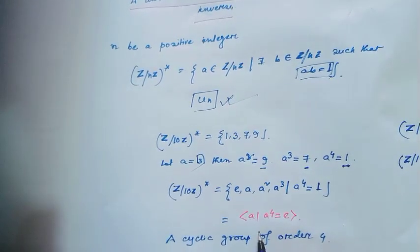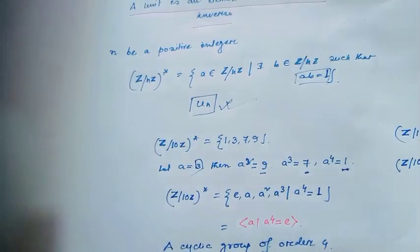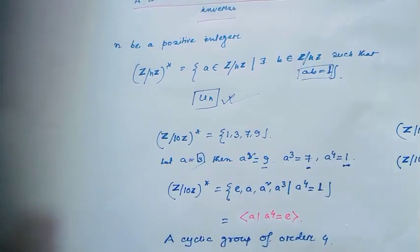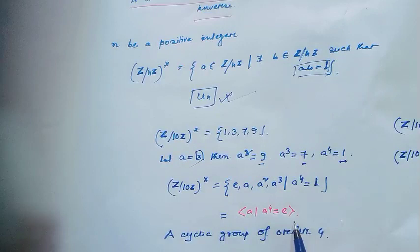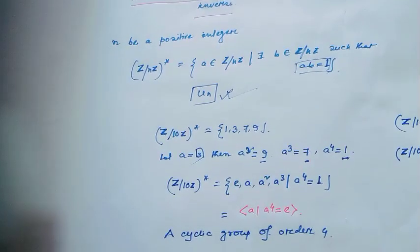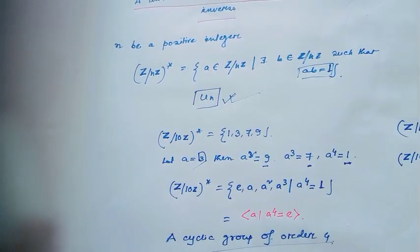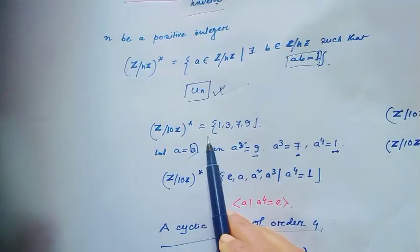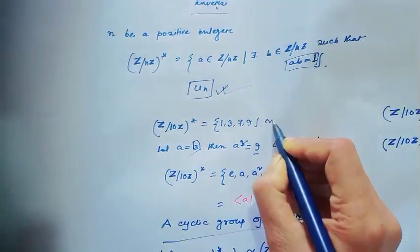The group Z mod 10Z star looks like the set {e, a, a², a³} such that a to the power 4 equals the identity. So a is the generator of this group, and this group is nothing but the cyclic group of order 4 — that means Z mod 10Z star is isomorphic to Z mod 4Z, where the operation is addition.